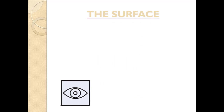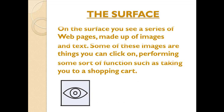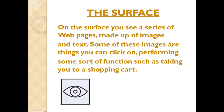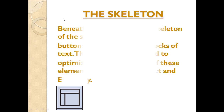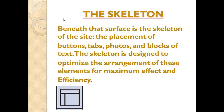Number one: the surface. On the surface you see a series of web pages made up of images and text. Some of these images are things you can click on, performing some sort of function, such as taking you to a shopping cart.